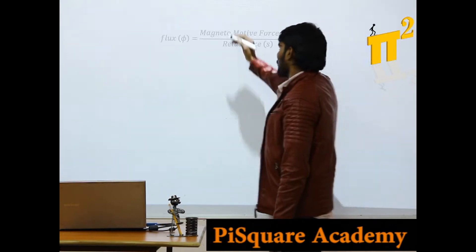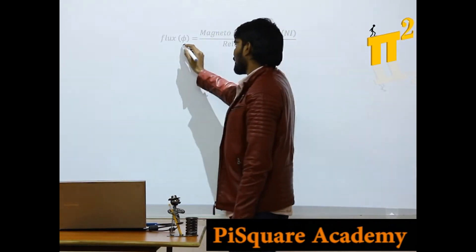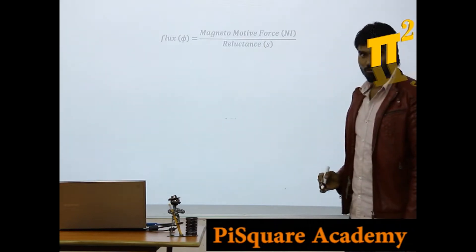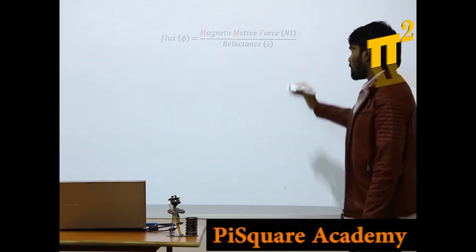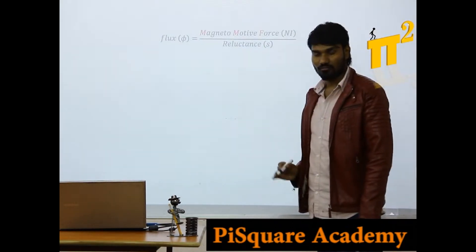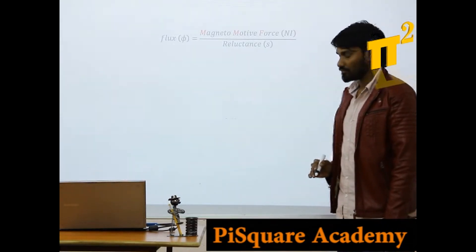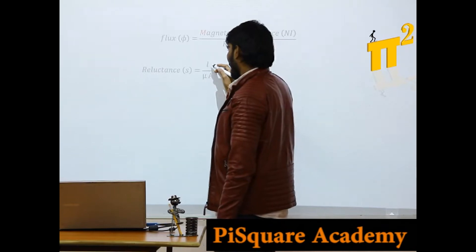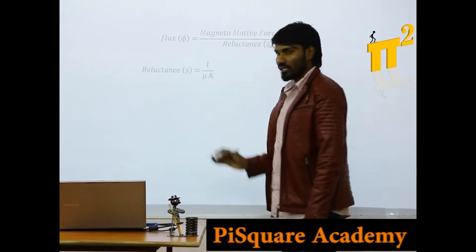Now, we know flux, flux equals MMF by reluctance. We know this basic equation, we know reluctance is equal to L by mu A.